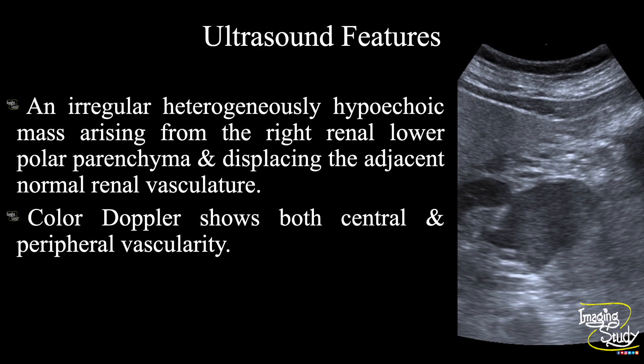In summary, an irregular heterogeneously hypoechoic mass arising from the right renal lower polar parenchyma and displacing the adjacent normal renal vasculature is noted. Color Doppler shows both central and peripheral vascularity. These features suggest a case of renal mass, possibly renal cell carcinoma.